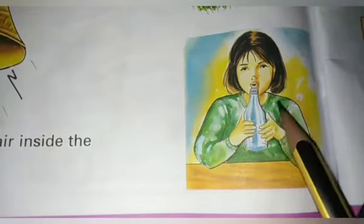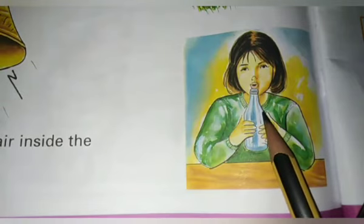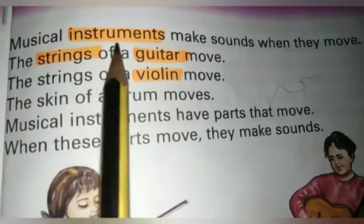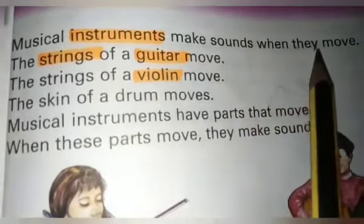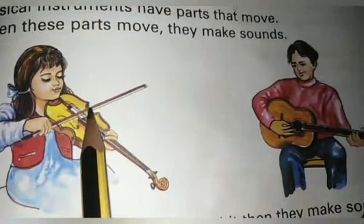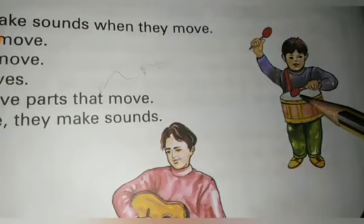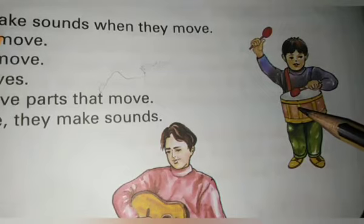If we blow into a bottle, the air inside the bottle moves fast. This makes a sound. Musical instruments make sounds when they move. The string of a guitar moves. The string of a violin moves. The skin of a drum moves. Musical instruments have parts that move, and when these parts move, they make sounds.